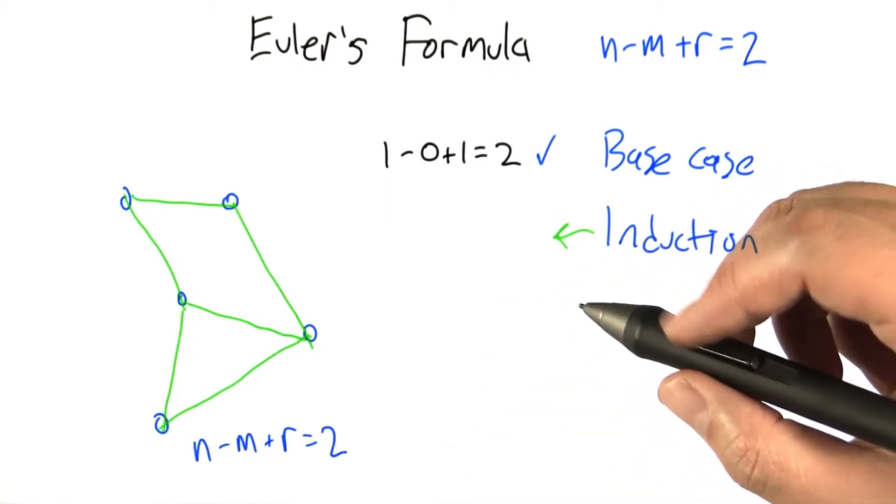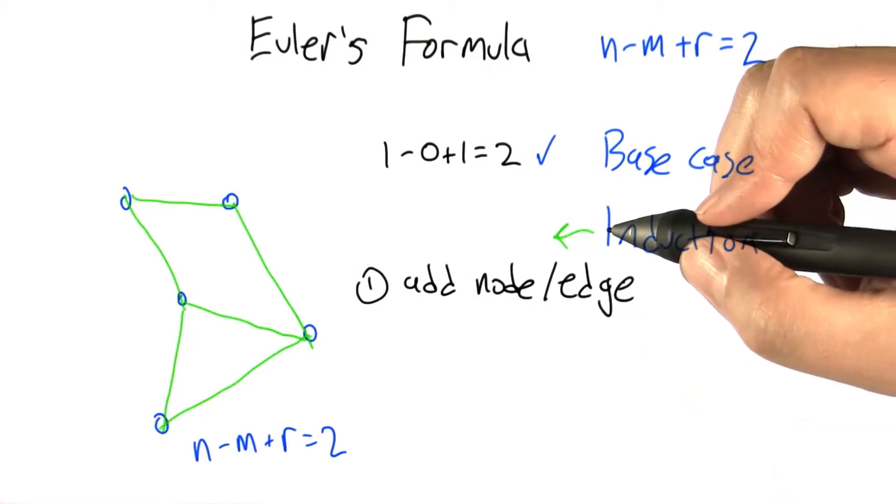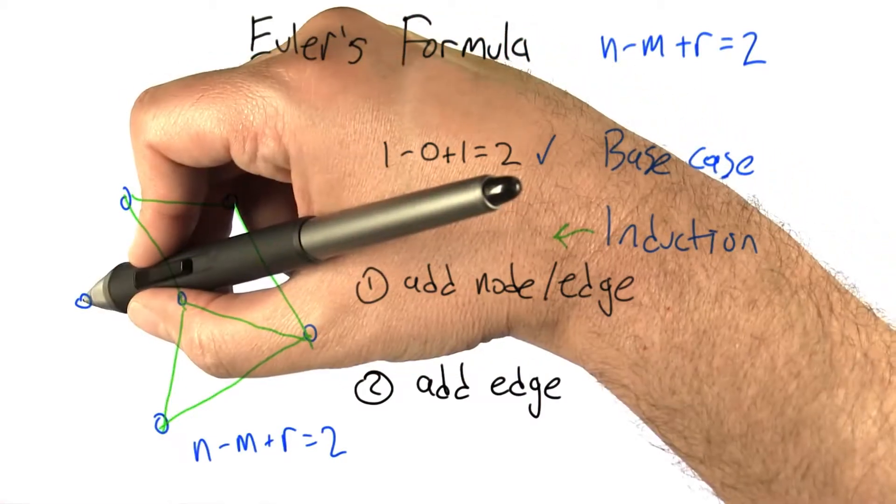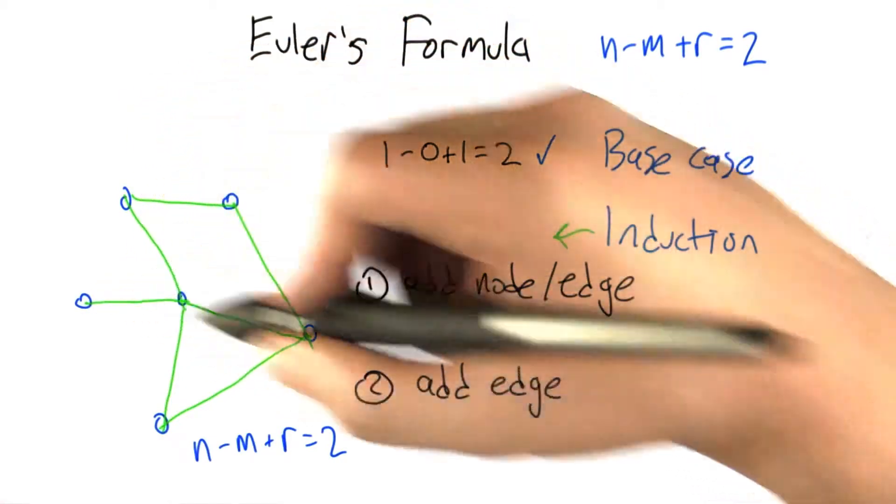There's two different ways that we can add to this graph. We can add a node and an edge together, or we can add an edge between two existing nodes. Let's consider this first case where we add a new node and an edge between them and it's still a planar graph.